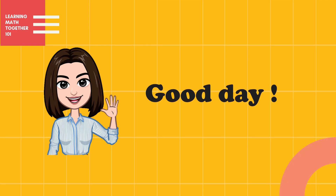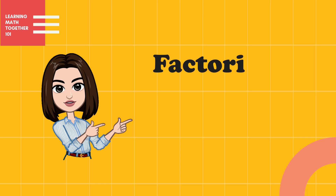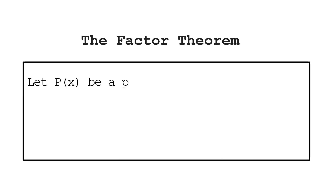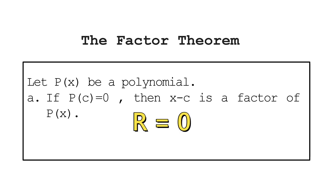Good day everyone. For today's video we will discuss the Factor Theorem and how to factor polynomials completely. The Factor Theorem states: let p(x) be a polynomial. If p(c) is equal to zero, then x minus c is a factor of p(x). P(c) here from the previous discussion is our remainder — that means if the remainder is zero, then x minus c is a factor of the given polynomial.